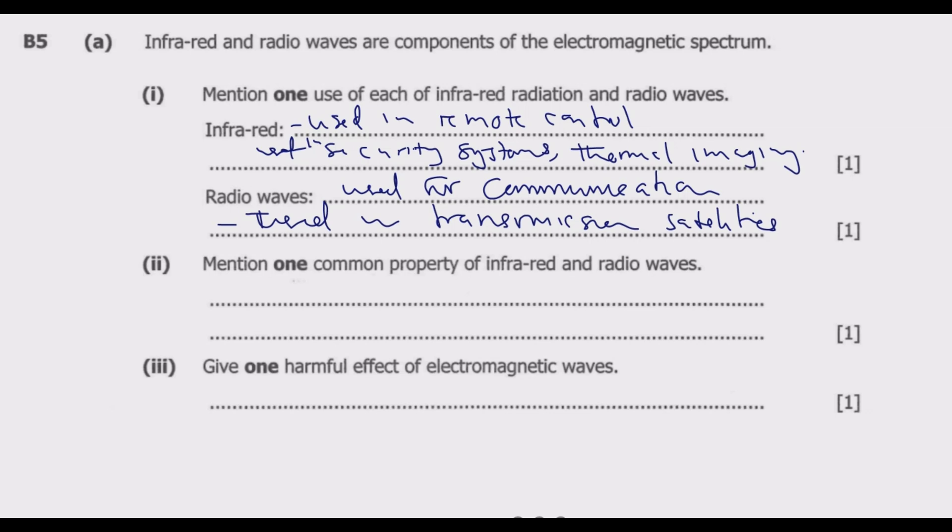Roman number 2, mention one common property of infrared and radio waves. Infrared and radio waves are all electromagnetic waves. As is the case with all electromagnetic waves, these waves are all transverse waves. That's the common property. Meaning, when they are moving, the particles vibrate perpendicular to the direction of propagation.